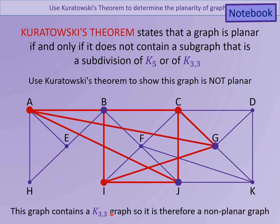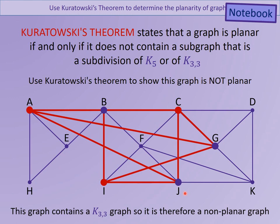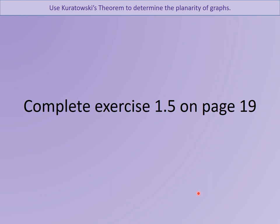That's what we mean by Kuratowski's theorem. If there was no k5 or k_{3,3} within a graph, we could say with confidence that it is a planar graph. Have a go at the exercise on page 1.5, on page 19.